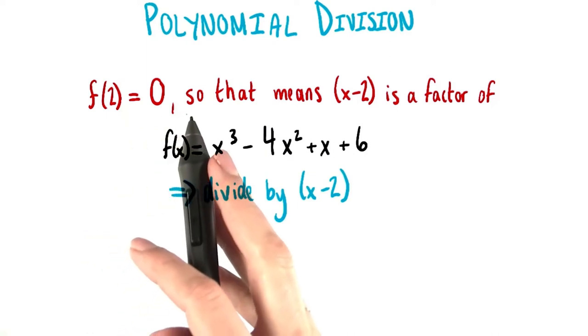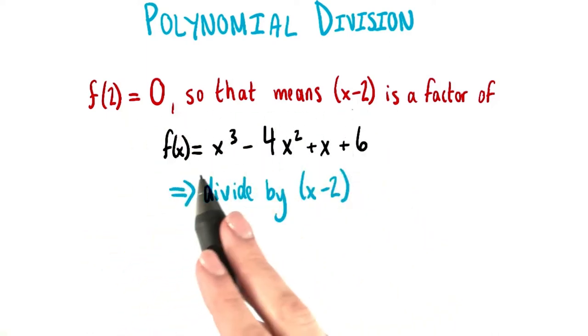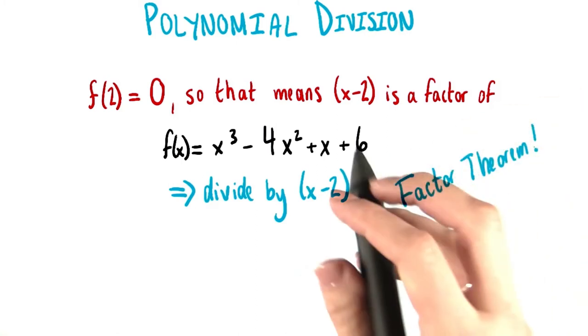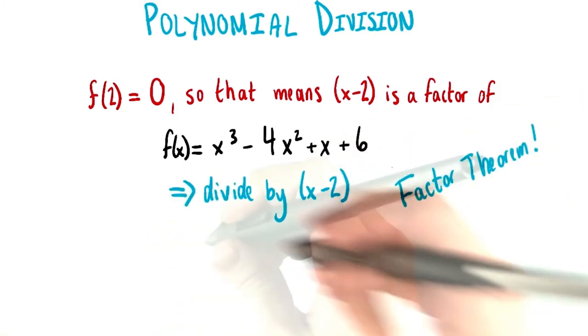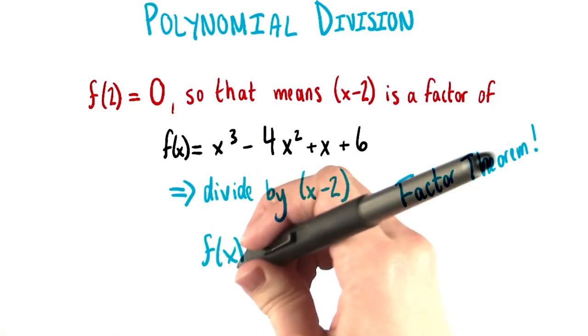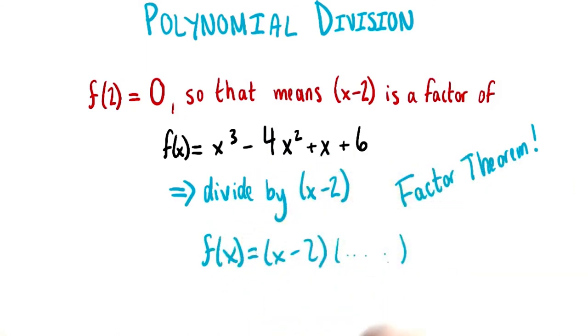From this, we learned from the factor theorem that x minus 2 must be a factor of the polynomial. So we're one step on our way to writing f of x in fully factored form. We know that eventually we'll be able to write it as x minus 2 times a bunch of other stuff.